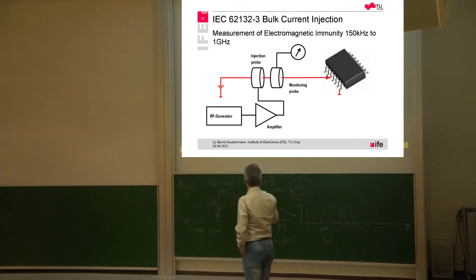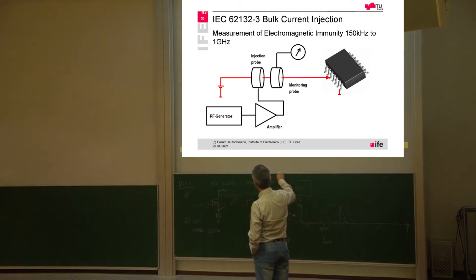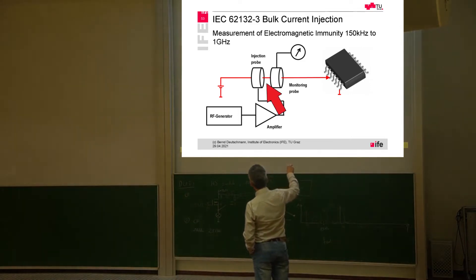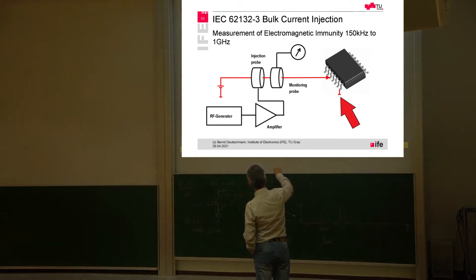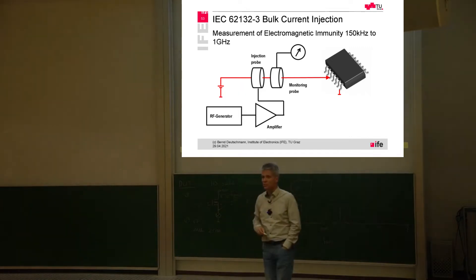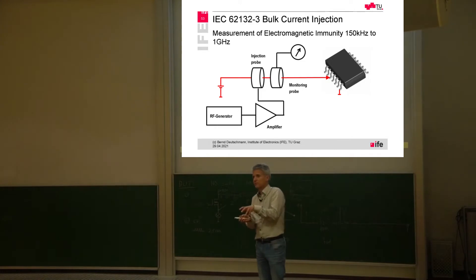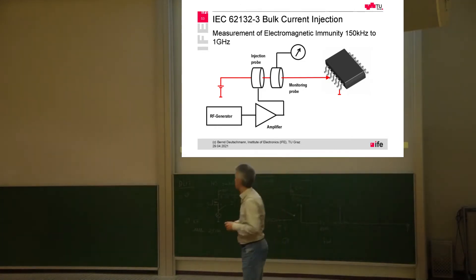As you can see here, maybe this is the power supply trace. We have a power supply here, there is a printed circuit board trace leading to the power supply pin, there is also a ground pin, so the current is flowing here in this loop, and then we are injecting into this loop by an injection probe our noise signals in form of an inductive coupler transformer.